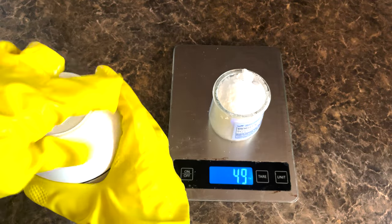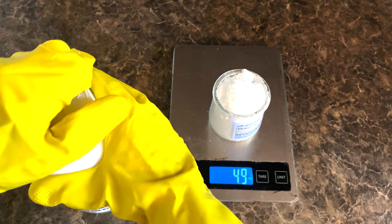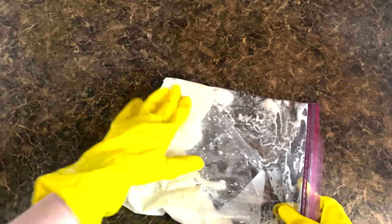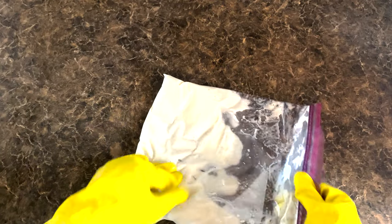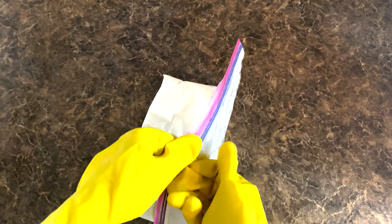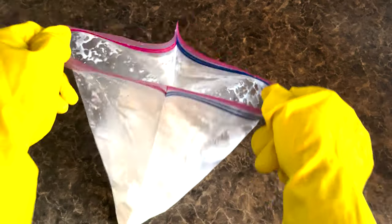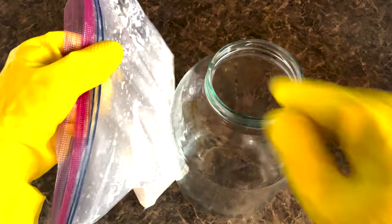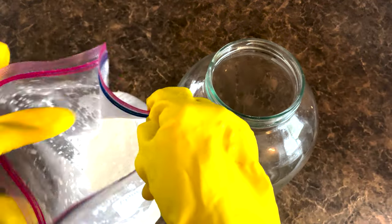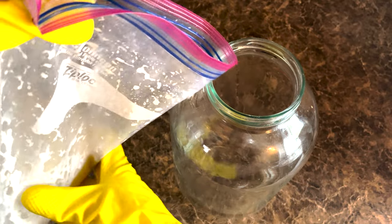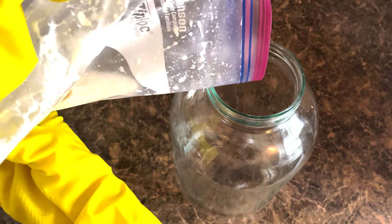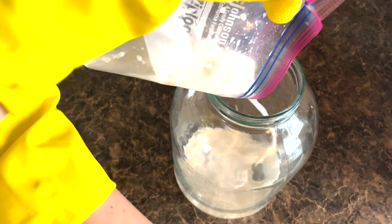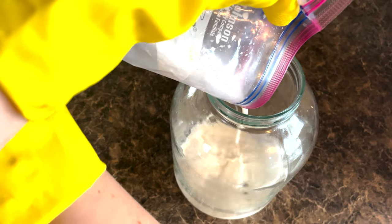Once you have it measured out, we are going to pull out our partially frozen slushy goat's milk. Prior to making your soap, I suggest that you freeze your goat's milk in a ziplock for approximately two to four hours. We do this because if we were to just add our lye in with refrigerated temperature milk it would scorch the milk, so given that it's a slushy consistency, that prevents scorching from occurring.